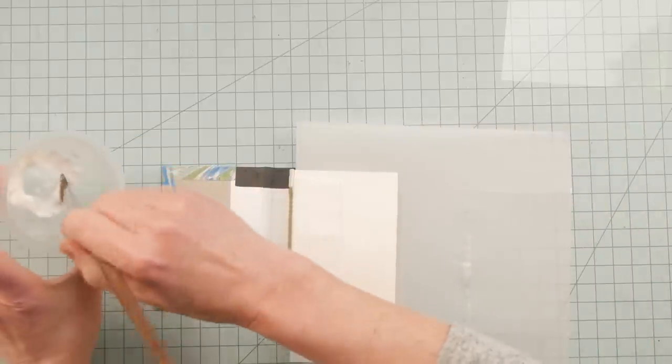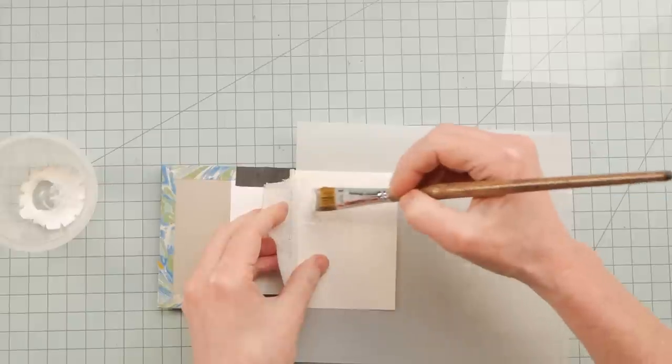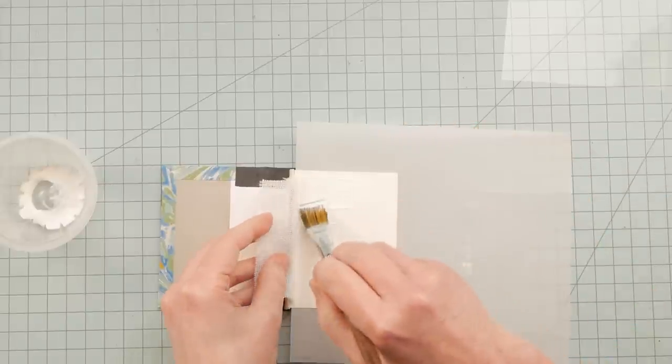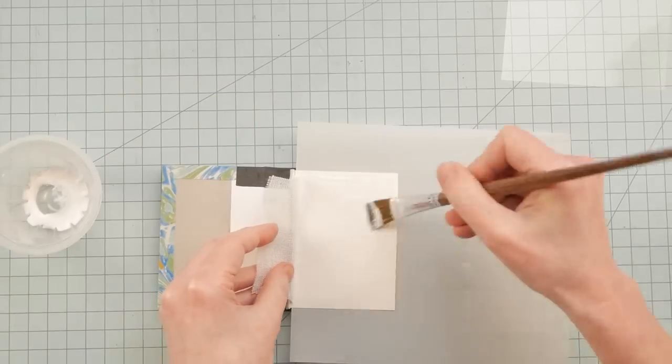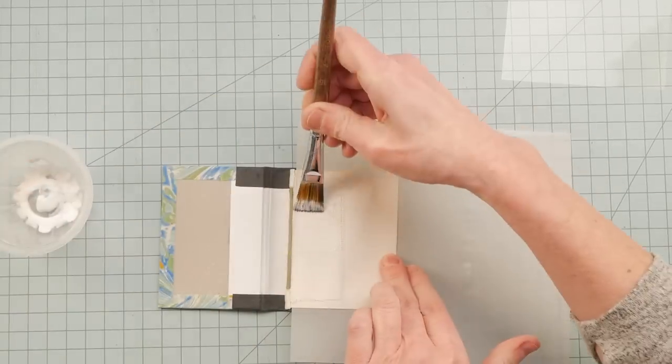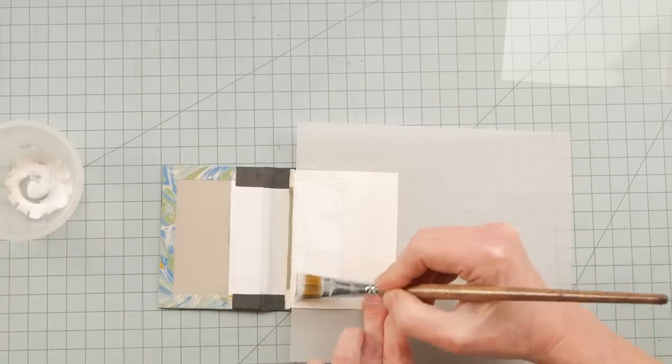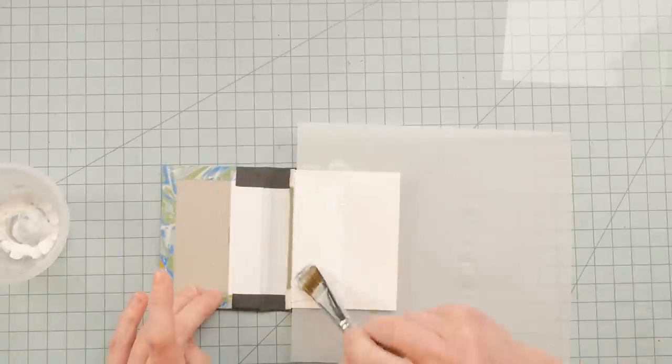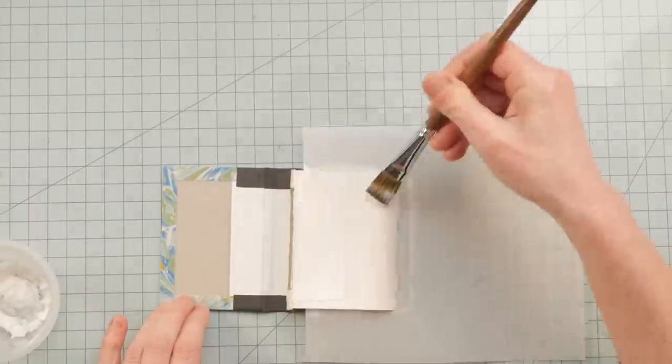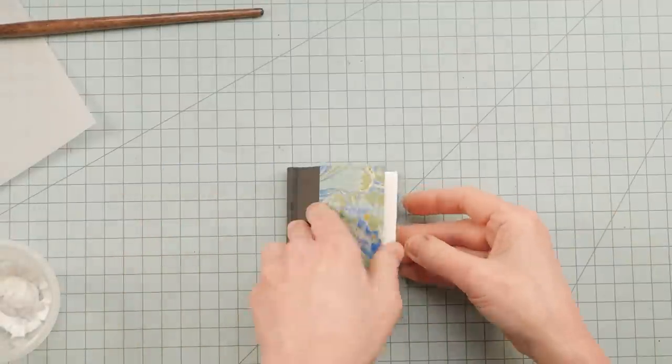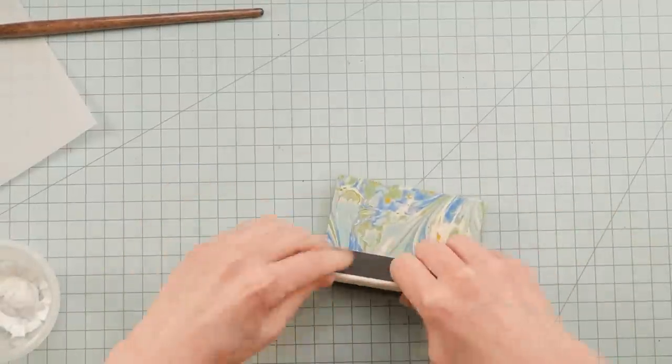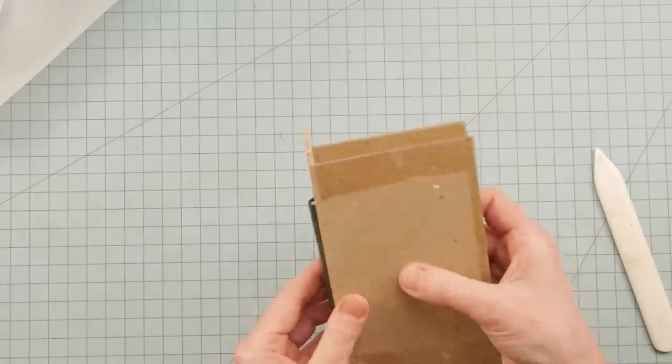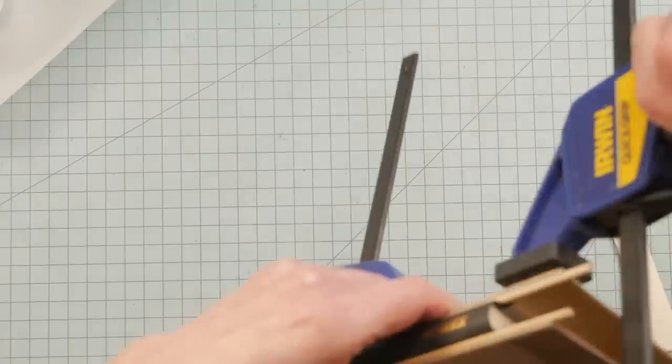Slip a piece of acetate and then flip it over. And I'll do the same thing on this side. The second side is usually easier because it's already secured on the other side.